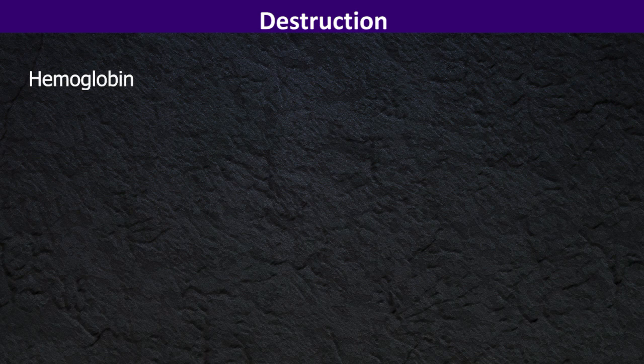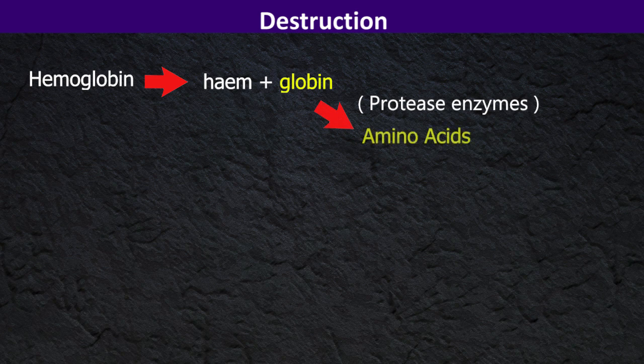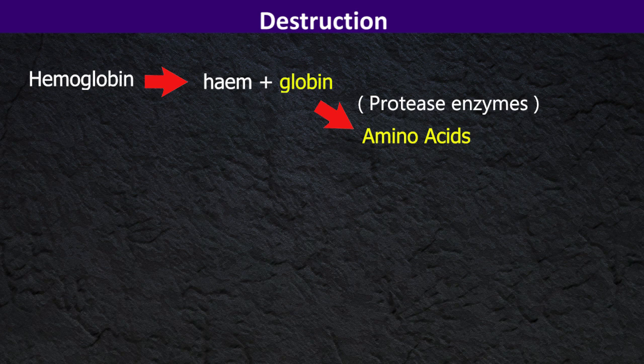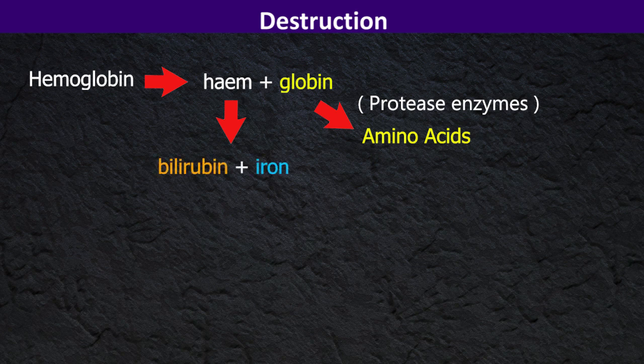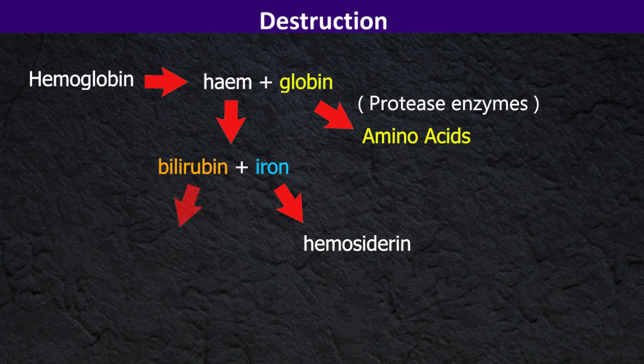Hemoglobin inside them is degraded into heme and globin parts. Proteases then degrade the globin chain into amino acids which get recycled to help in protein synthesis. The heme components get degraded into bilirubin and iron. Iron ends up as hemosiderin and bilirubin gets metabolized in the liver and later excreted in bile.